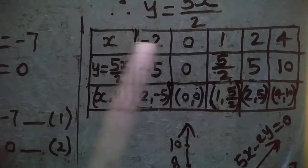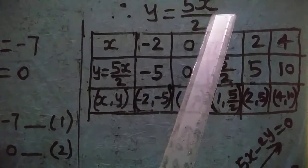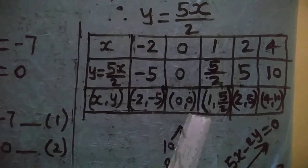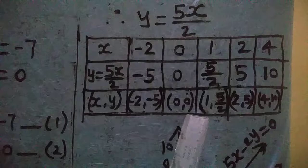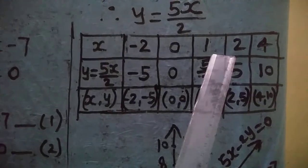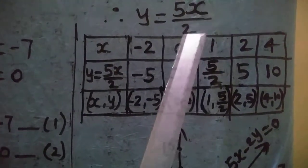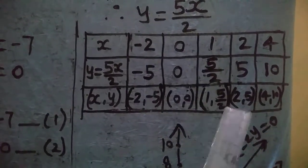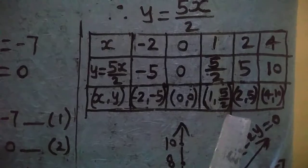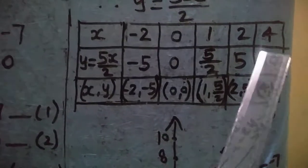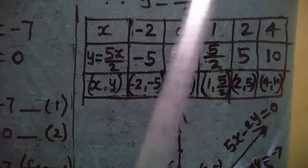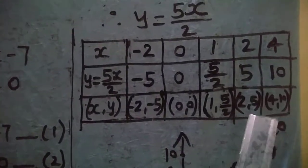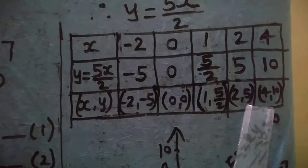When x = 0: y = 5×0 / 2 = 0. So the coordinates are (0, 0). When x = 1: y = 5×1 / 2 = 5/2. So the coordinates are (1, 5/2). When x = 2: y = 5×2 / 2 = 10/2 = 5. So the coordinates are (2, 5).